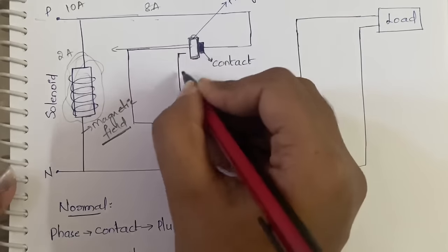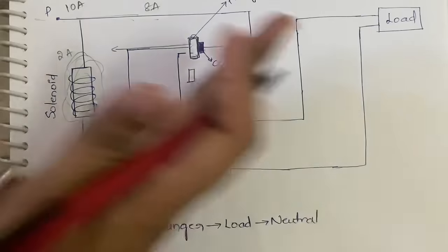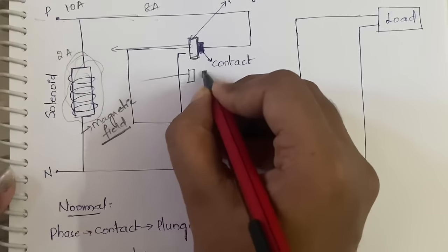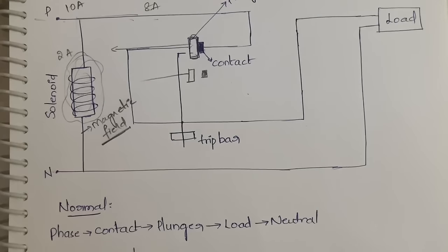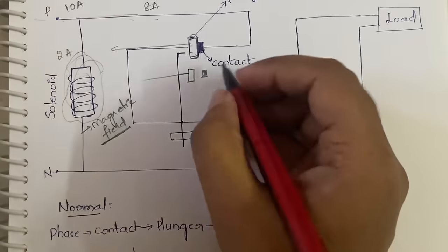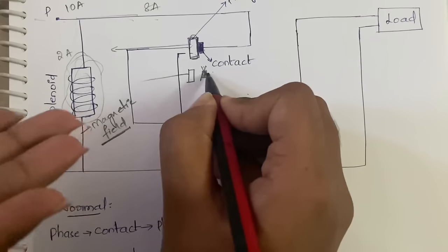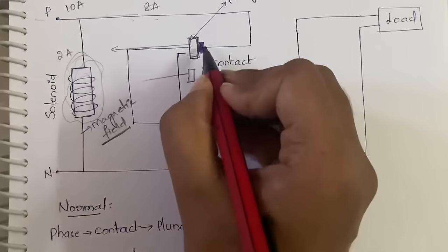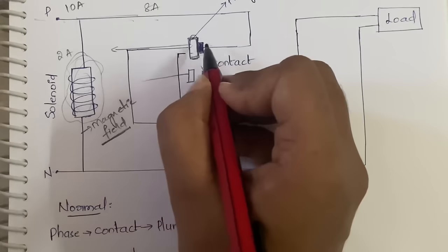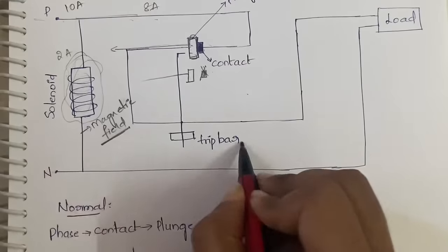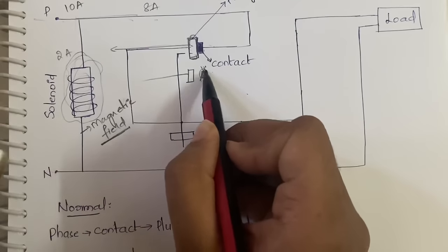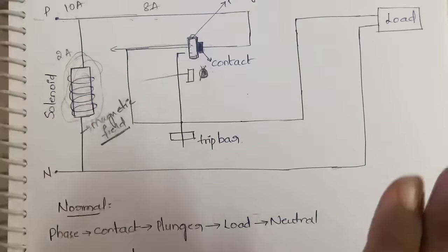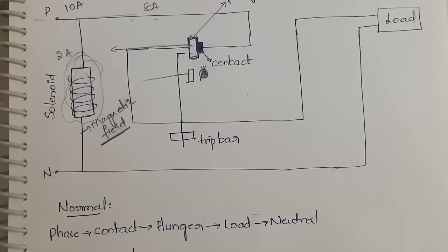As the plunger is attracted and moves toward the solenoid, a gap is created between the closed contact and the plunger. The contact stays in place while the plunger moves away, so the circuit becomes open — current comes and stops at the contact with no further path to flow. As a result no current flows and the load is safe.